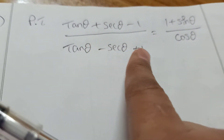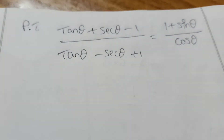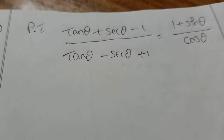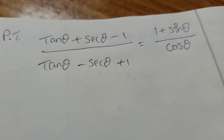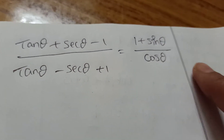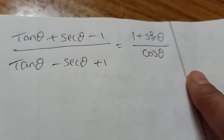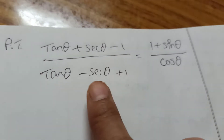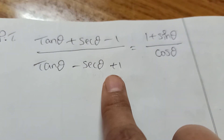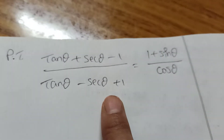Third question: prove that tan θ plus sec θ minus 1, divided by tan θ minus sec θ plus 1, equals (1 plus sin θ) divided by cos θ. This is an important question involving tan theta and secant theta.